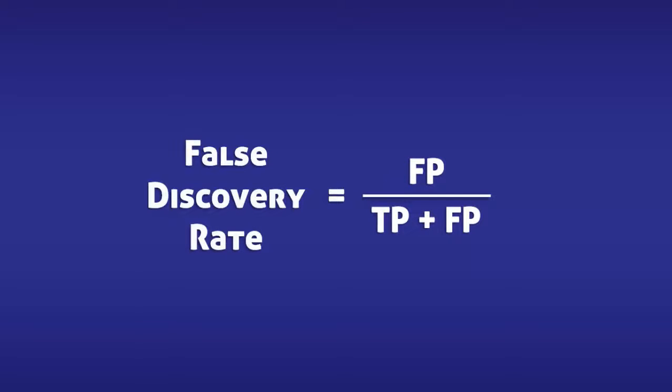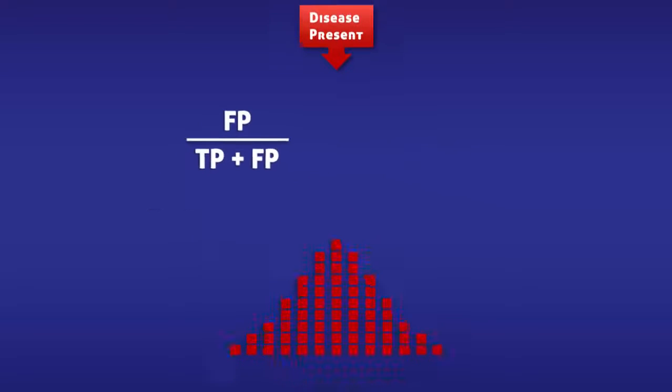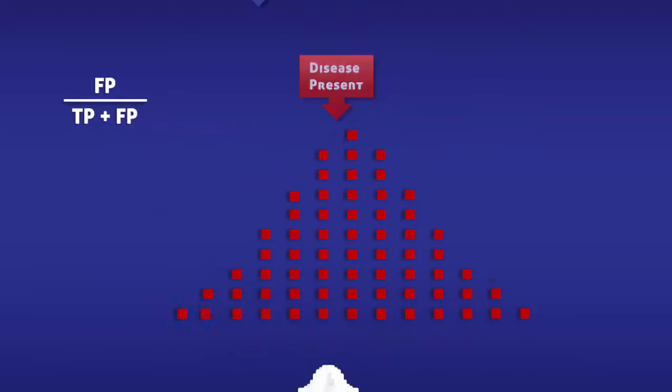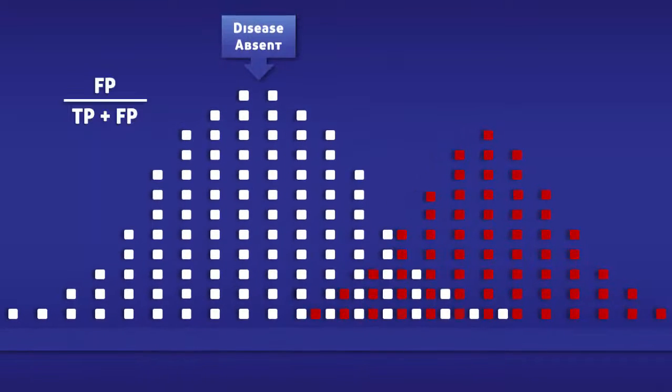The false discovery rate is calculated by dividing the number of false positives by the total number of positive tests. To help us understand this equation, we are going to imagine that a group of people are being tested for a disease.